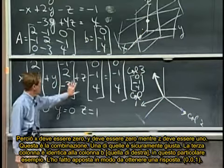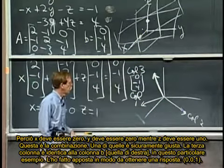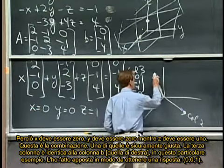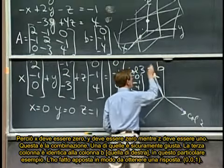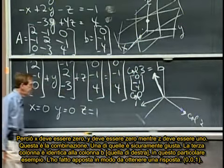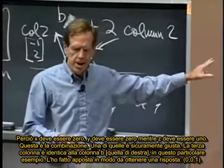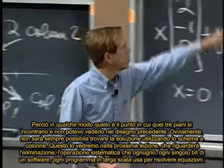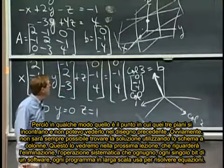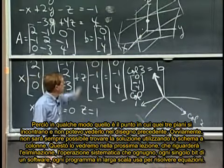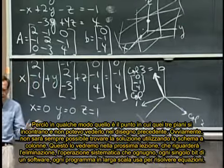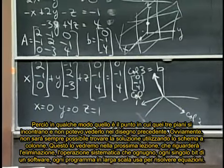That's the combination. None of that, none of that, one of those is obviously the right one. So this column three is actually the same as b in this particular problem. I made it work that way just so we would get an answer, zero, zero, one. So somehow that's the point where those three planes met and I couldn't see it before.